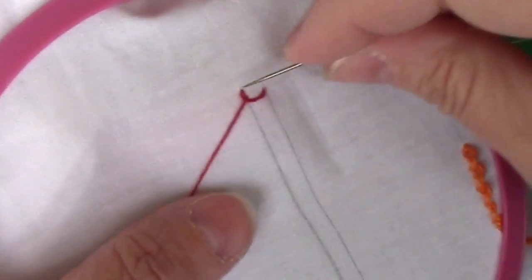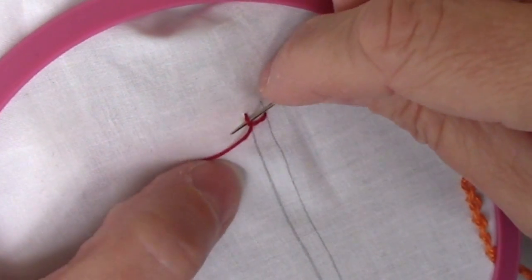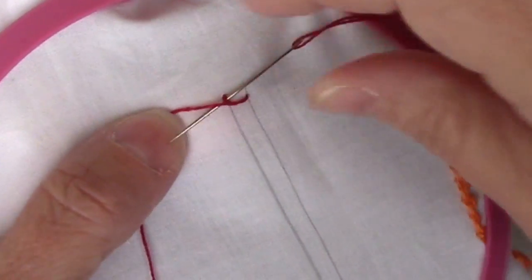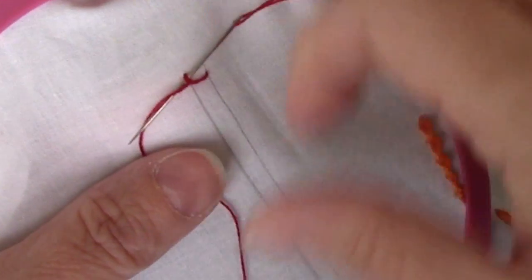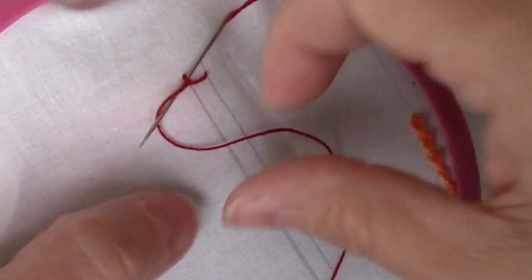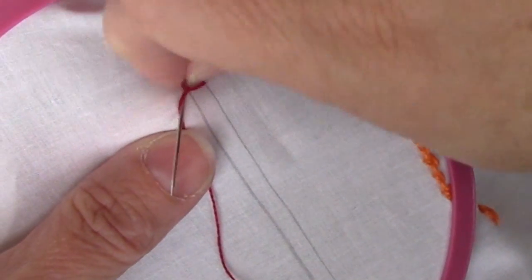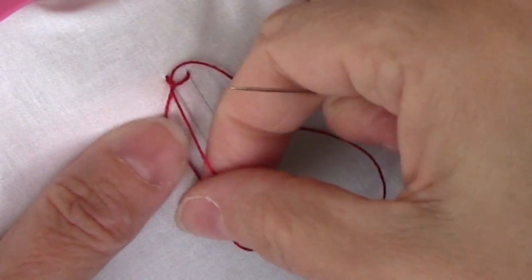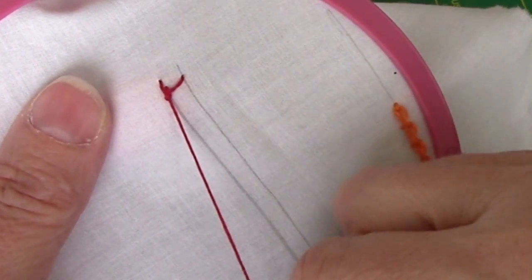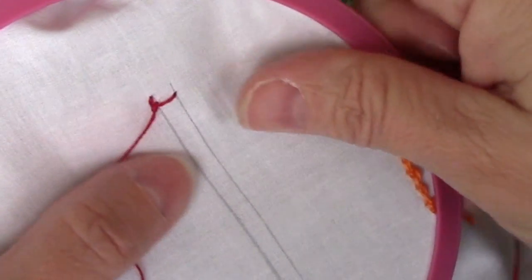Now, for the knot, we are going to go up under that horizontal. Then we want to make sure the thread is under the needle, so you're actually kind of going through a really big loop out here. And pull through. And there's our first little knot.